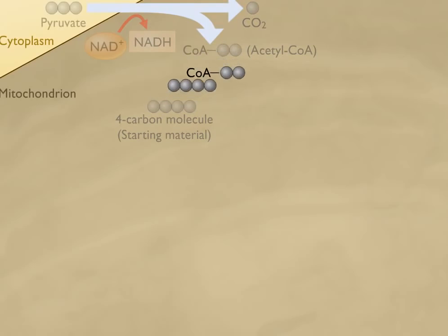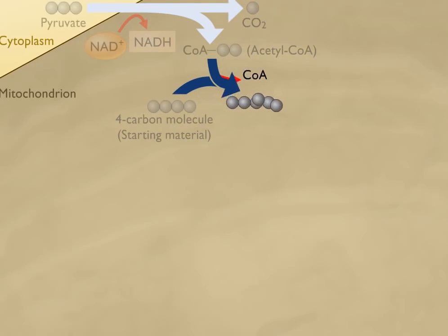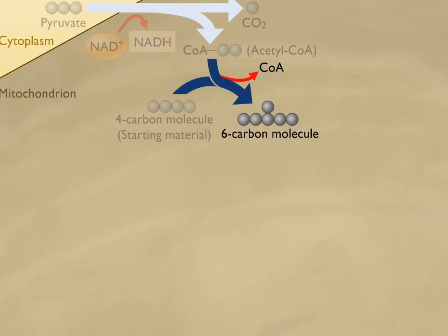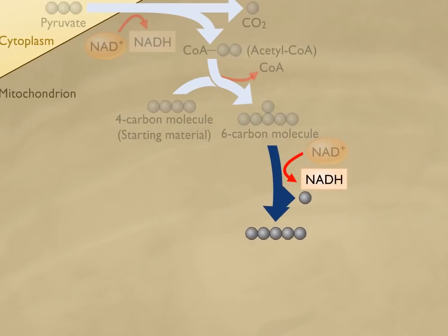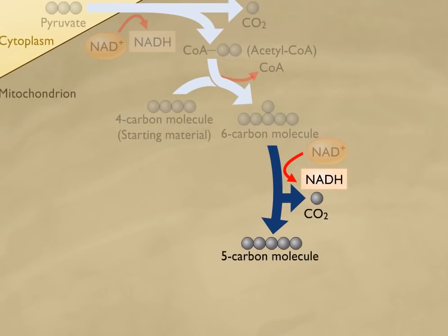producing a six-carbon compound. The CoA carrier molecule is released. Carbon dioxide is then released from the six-carbon molecule, forming a five-carbon compound. In this step, hydrogen is removed and transferred to NAD+ to form NADH.